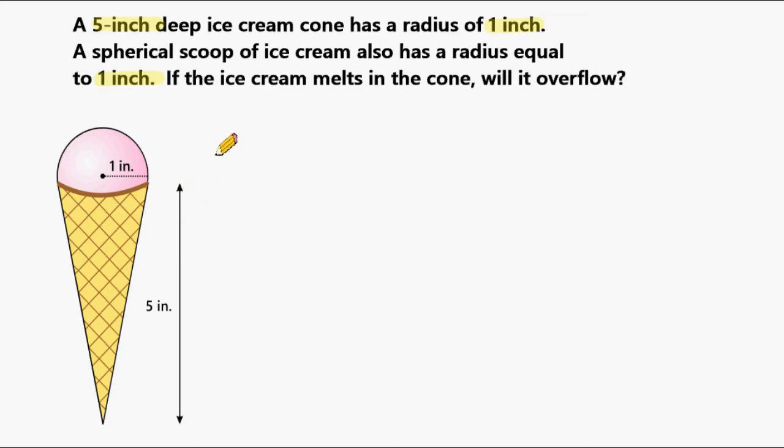To solve this problem, we have to know how to find the volume of a sphere as well as the volume of a cone. The volume of a sphere is equal to 4/3 times pi times radius to the third power.